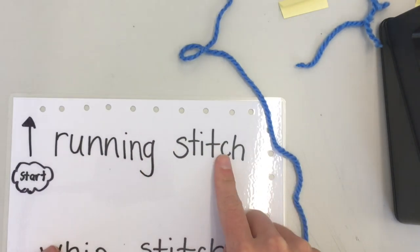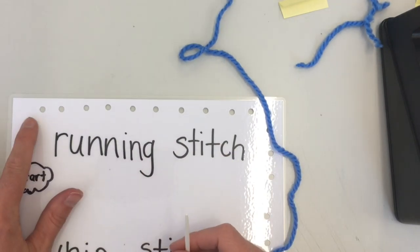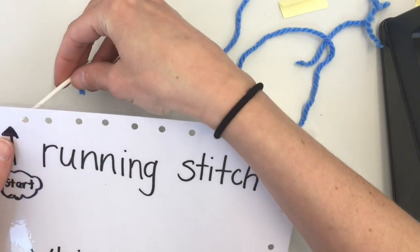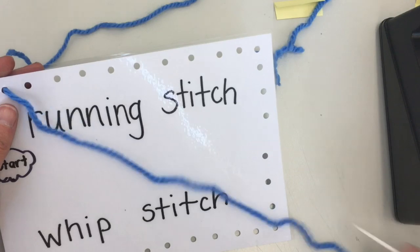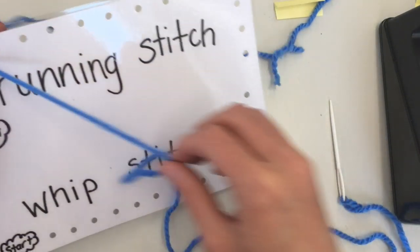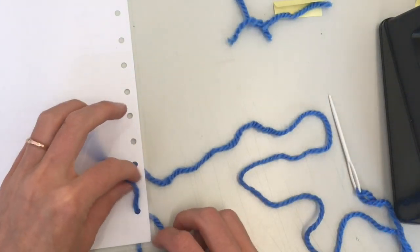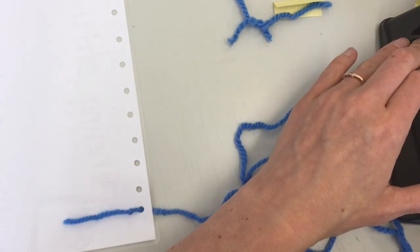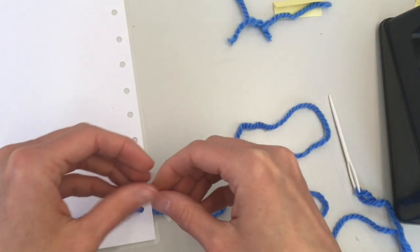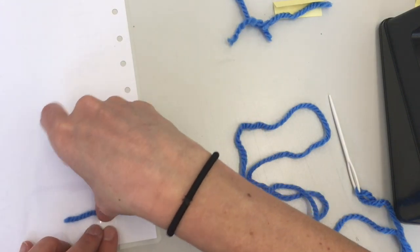First, let's try the running stitch. Start here at the first hole and pull the needle through the hole towards you. As you pull the yarn, you're going to want to turn it over, and since the knot won't be as big for this paper but it will be when you use felt or fabric, we're just going to use tape to secure it.